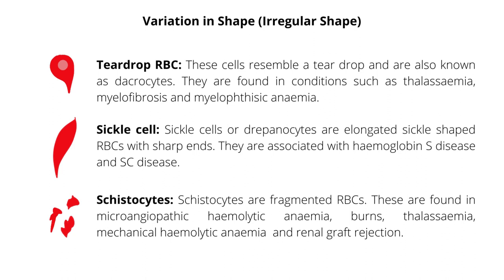Teardrop cells resemble a teardrop and are also known as dacrocytes. They are found in conditions such as thalassemia, myelofibrosis, and myelophthisic anemia. Sickle cells or drepanocytes are elongated sickle-shaped red blood cells with sharp ends. They are associated with hemoglobin S disease and SC disease.